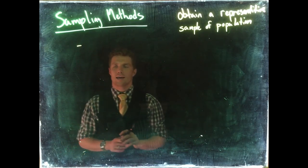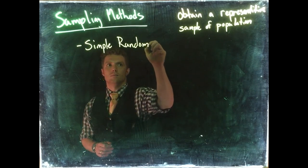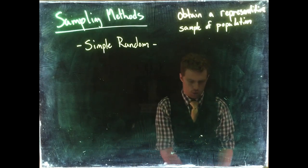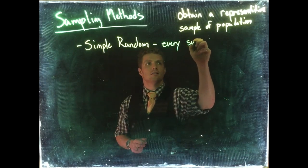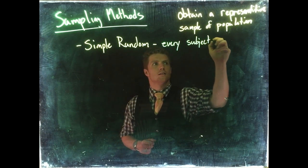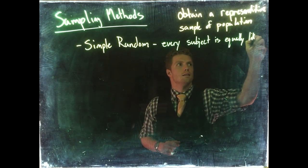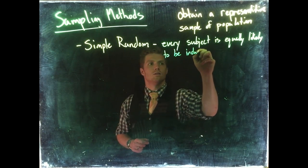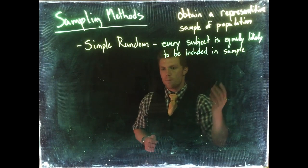The most common good one that we find is called simple random sampling. Simple random sampling just means that every subject is equally likely to be included in the sample.